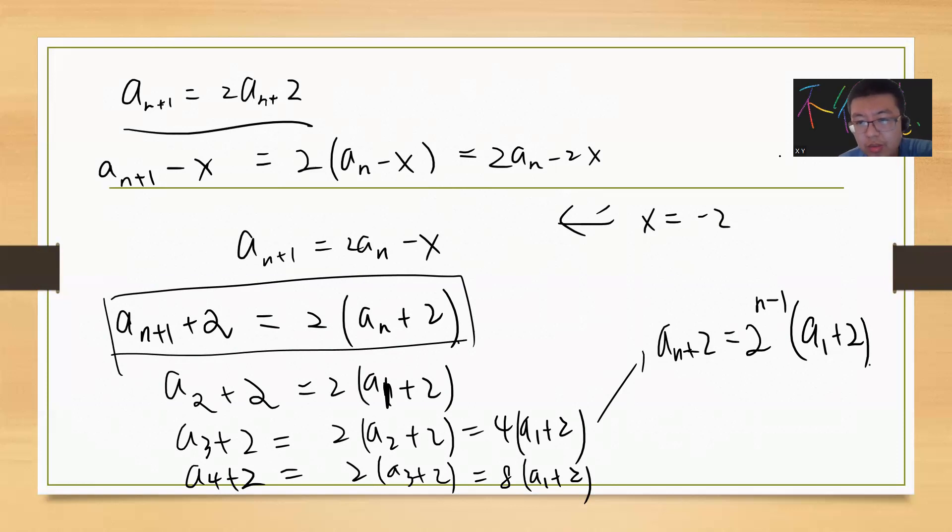So you get a_n = 2^{n-1}×4 - 2, which is a_n = 2^{n+1} - 2.